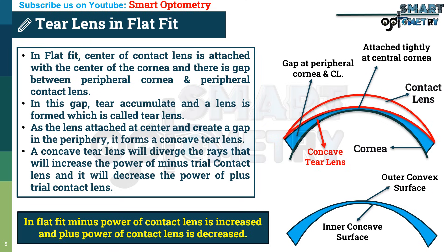Remember, when a lens is not fit properly, it will create a tear lens, and the tear lens changes the effective power of the trial lens that we obtain in over-refraction.